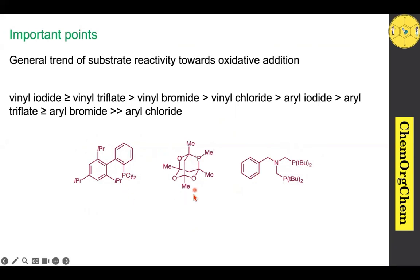For substrates that are difficult to undergo the Sonogashira cross-coupling reaction, placing electron-withdrawing groups on the substrate can boost reactivity toward oxidative addition. In this way, we can improve the reactivity of particular substrates.